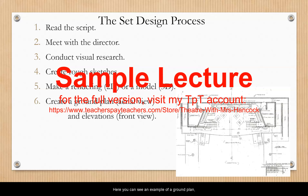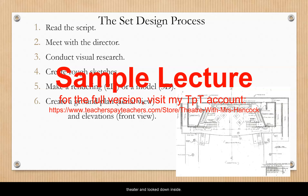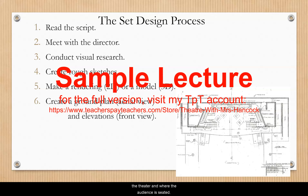Here you can see an example of a ground plan or aerial view. It is as if a giant came along and pulled the roof off the theater and looked down inside. You can see the top of all the scenery and major props, like furniture, as well as the thick walls of the theater and where the audience is seated.